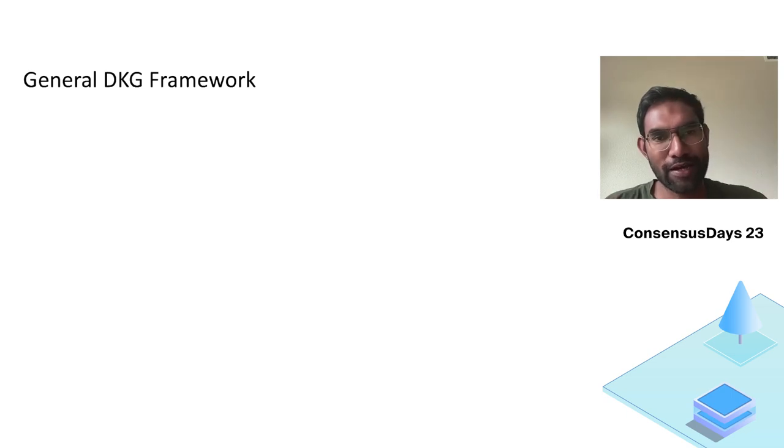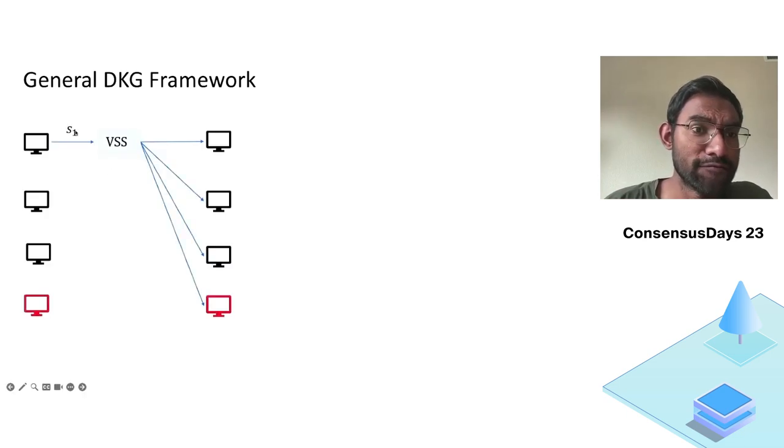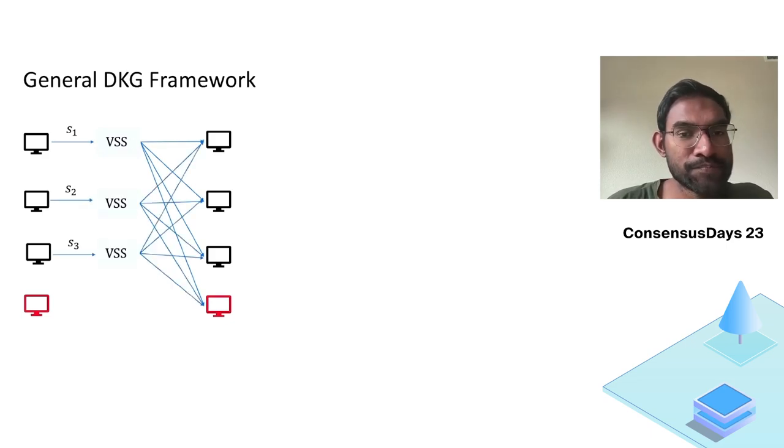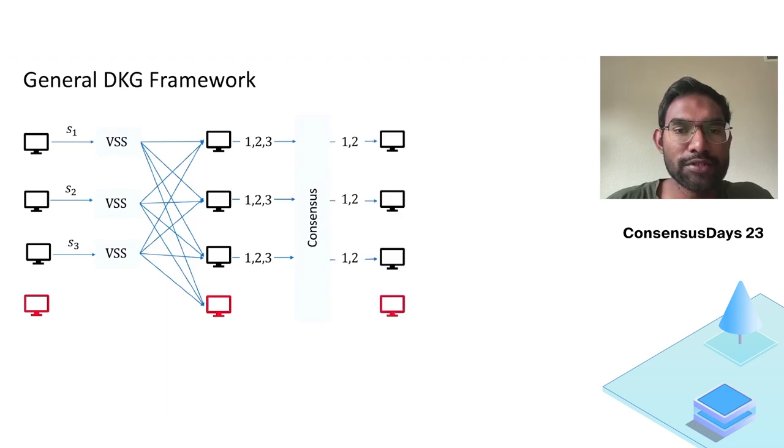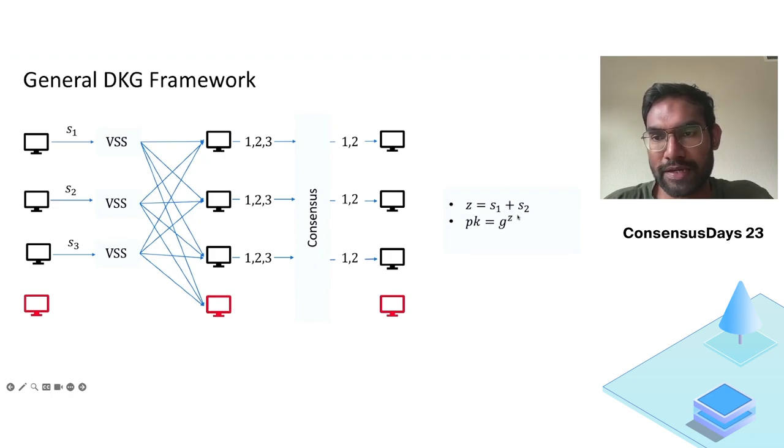Let's look at existing DKG templates. If you look at any DKG protocol out there, you'll probably see a similar template. Each party will sample a random value and will share this value using a verifiable secret sharing. Every party will do this in parallel. Then they will run a consensus mechanism to agree on which subset of parties did their VSS correctly. Let's say the consensus outputs one and two, which means party one and party two did their VSS correctly. Then the DKG secret will be the sum of these two random values. Public keys are correspondingly defined, and the share of each party will be the sum of the shares of the corresponding secrets. So this is the share of party i. I denote them using angle brackets. It will be share of S1 plus share of S2.